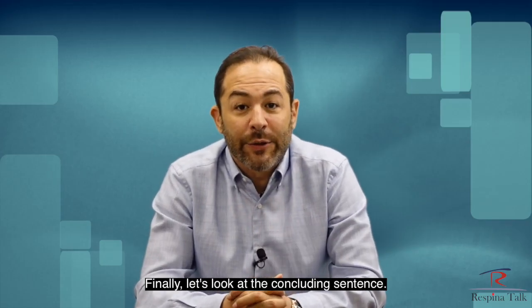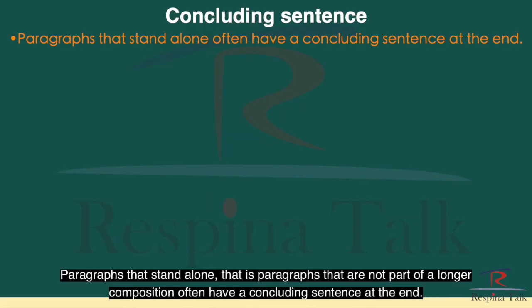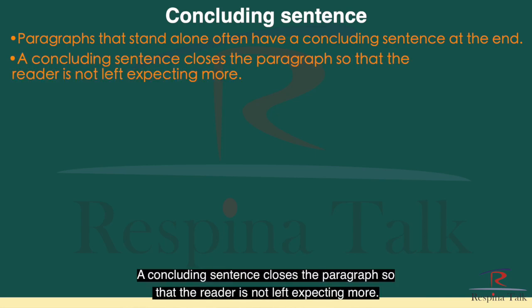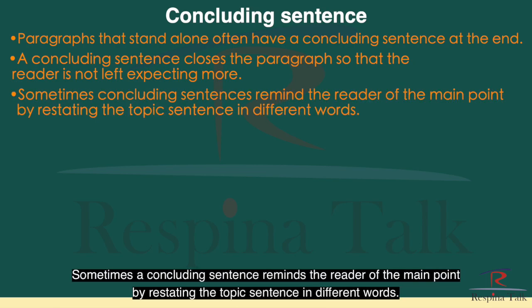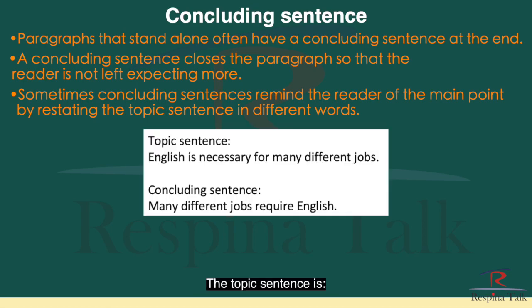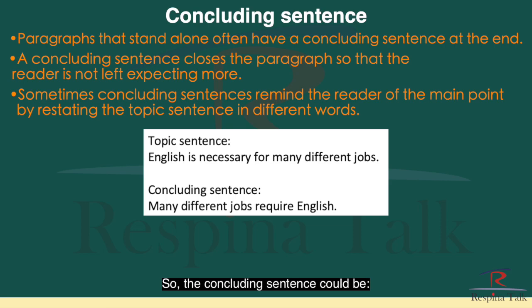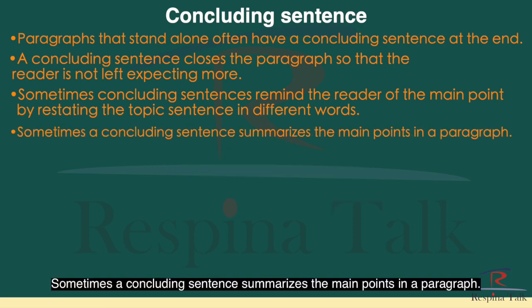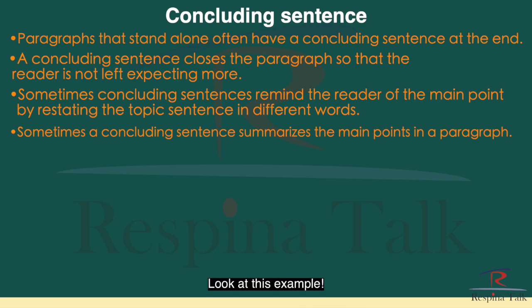And finally, let's look at the concluding sentence. Paragraphs that stand alone — that is, paragraphs that are not part of a longer composition — often have a concluding sentence at the end. A concluding sentence closes the paragraph so that the reader is not left expecting more. Sometimes a concluding sentence reminds the reader of the main point by restating the topic sentence in different words. For example, if the topic sentence is 'English is necessary for many different jobs,' the concluding sentence could be 'Many different jobs require English.'